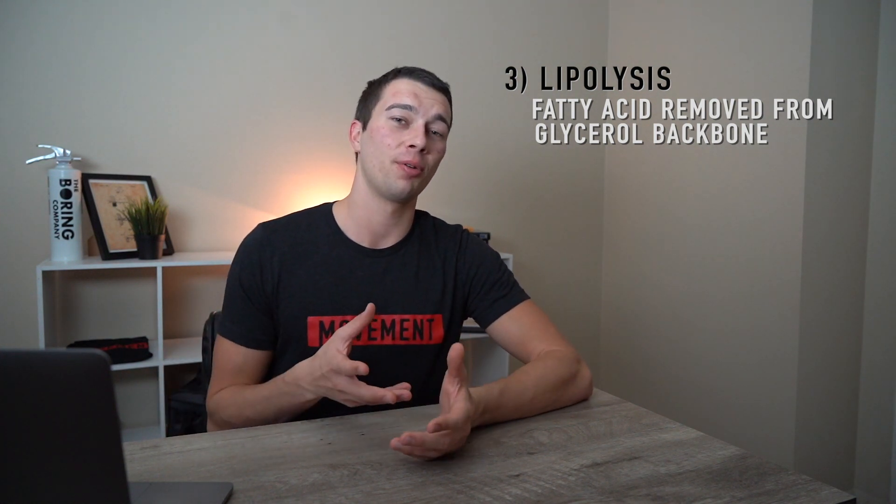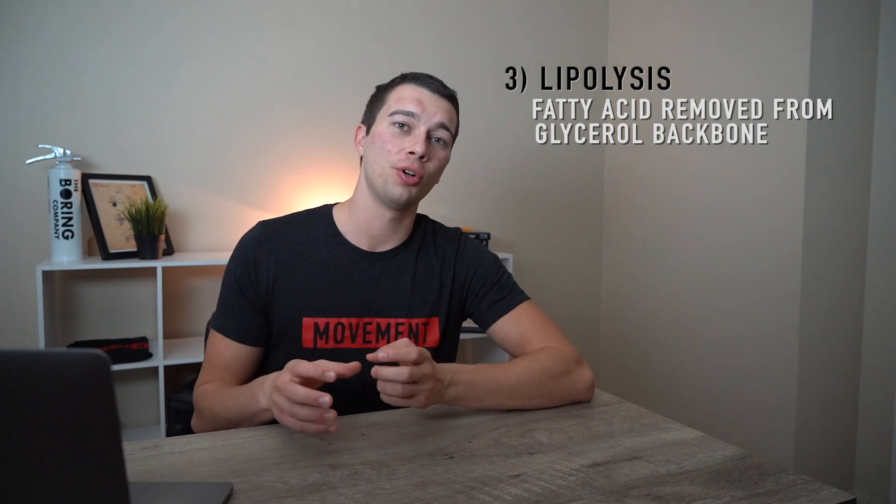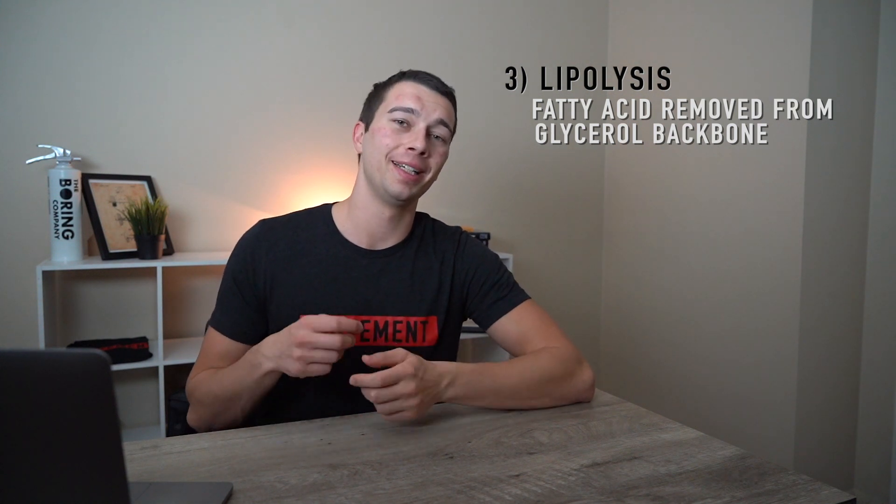As a quick review, lipolysis is basically the process of taking a fatty acid and removing it from the glycerol backbone, and that's part of the process of breaking down a fat. The other part would be beta oxidation, where we turn the fatty acid into acetyl-CoA. So basically, cortisol is just helping to get that process of fat burning started.